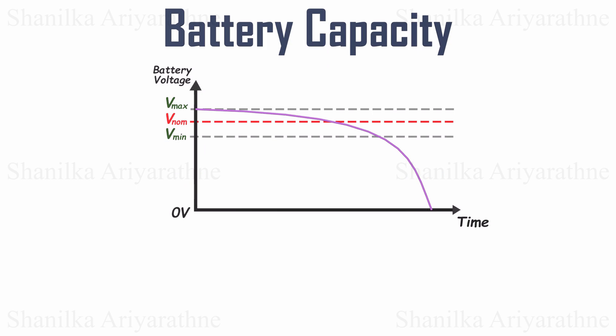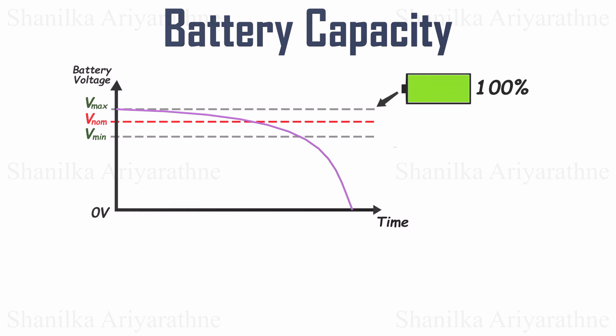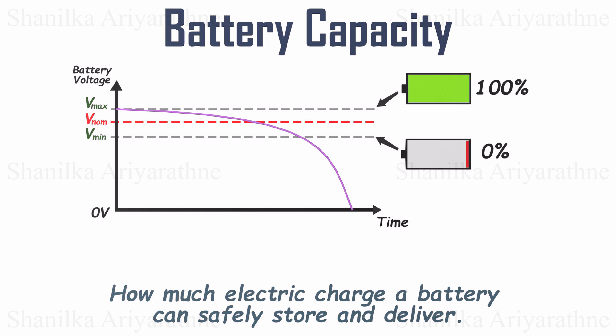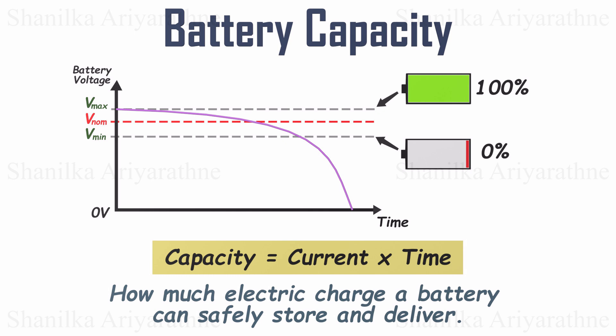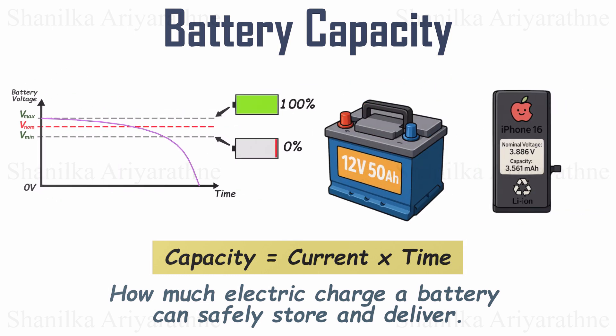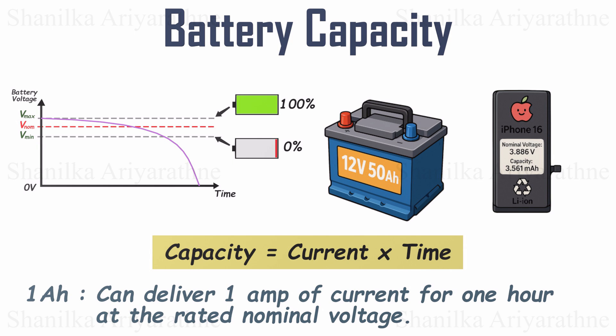What exactly is battery capacity? For safe battery operation, we keep the voltage within certain limits. The highest safe voltage is labeled 100% charge, and the lowest safe voltage is labeled 0% or fully discharged. Battery capacity is a measure of how much electric charge the battery can store and deliver within those safe limits — it tells you how long your device can run before it needs a recharge. We calculate capacity by multiplying the average charging or discharging current by the time it takes to fully charge or discharge. For larger batteries like car batteries, we measure capacity in amp hours. For smaller devices like phones, we use milliamp hours, which is one thousandth of an amp hour.